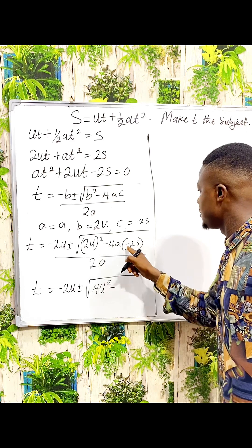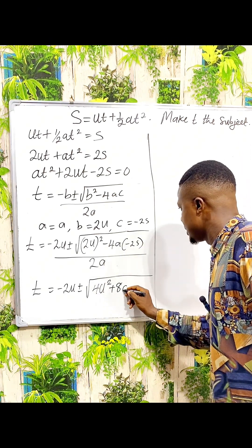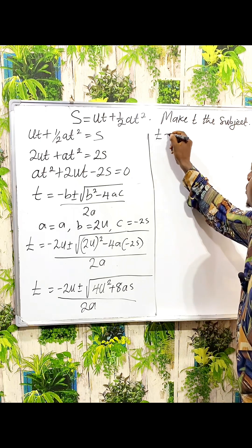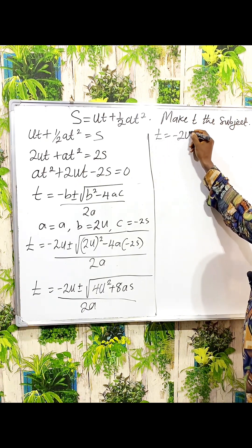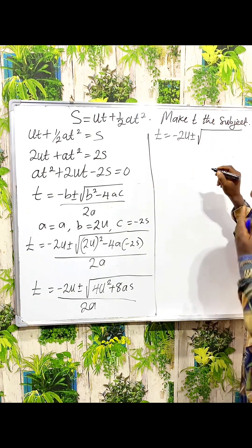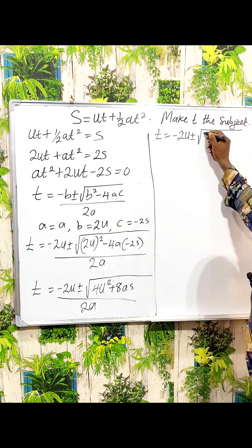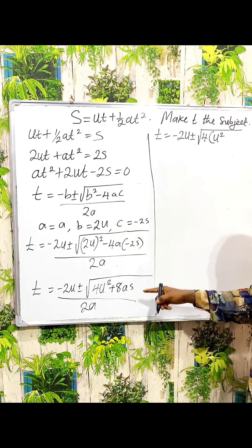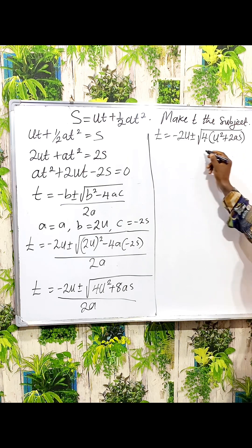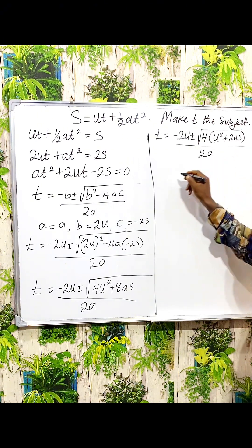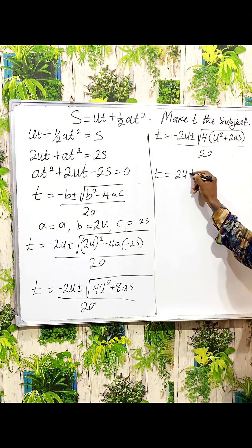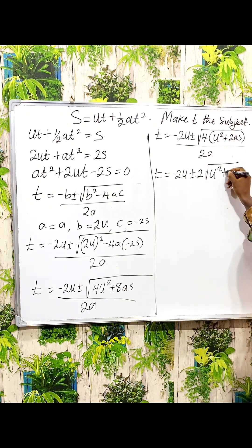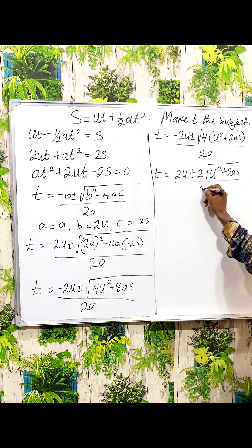...then minus times minus is plus, so 4 times a times 2S gives 8aS. Everything all over 2A. Now, 4 is common inside the square root. Let me factor out 4: 4U squared divided by 4 is U squared, and 8aS divided by 4 gives 2aS. Everything all over 2A. The square root of 4 is 2, so we get minus 2U plus or minus 2 times the square root of U squared plus 2aS, all over 2A.